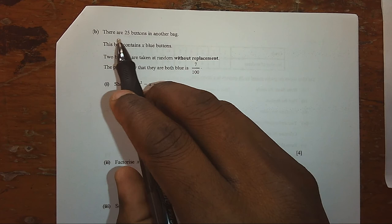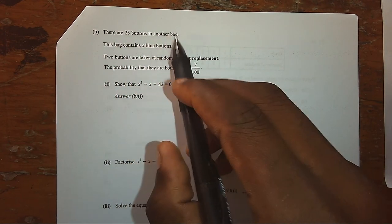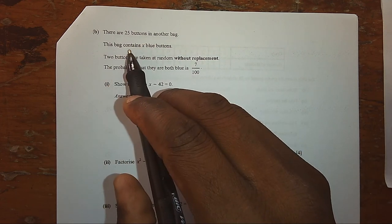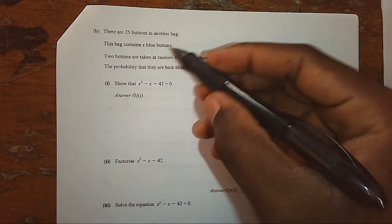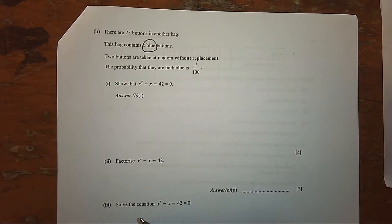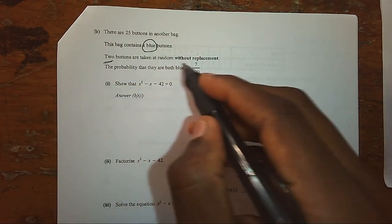Here is another problem. There are 25 buttons in another bag. This bag contains X blue buttons. Two buttons are taken at random without replacement.